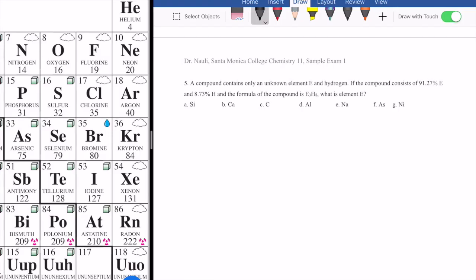So in number 5, we're being asked to figure out the identity of an element, which has a formula of E3H8, and we were also told the percent composition of that compound, which contains 91.27% E and 8.73% hydrogen.